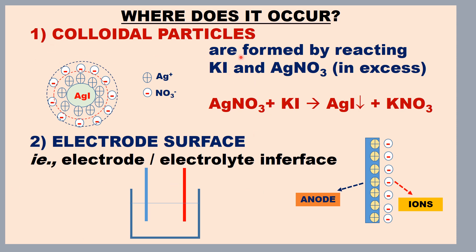Suppose KI is in excess. If KI is in excess, then the colloidal particles will be negatively charged — I minus will be adsorbed. So in excess of KI, silver iodide colloidal particles are negatively charged because I minus ions are adsorbed first, and then K plus ions are attracted to I minus.